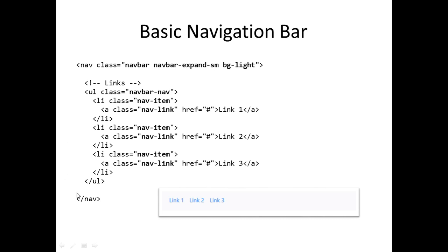So here we use the navbar tag with class navbar, then navbar-expand-sm and bg-light. Inside, we have the unordered list with navbar-nav, and for each item we have nav-item, and for each link we have nav-link. That is the simplest, most basic navigation bar, and its appearance will look similar to this example.